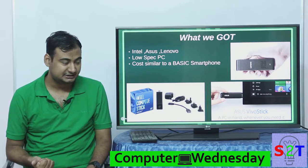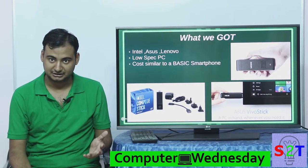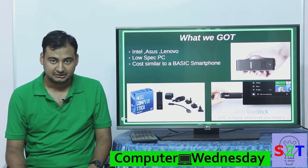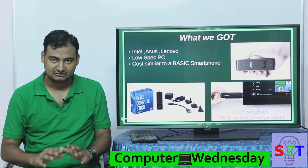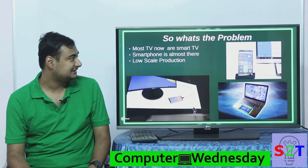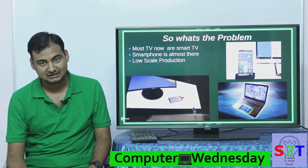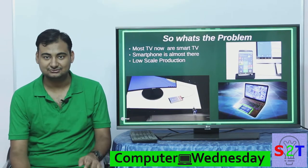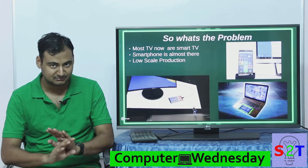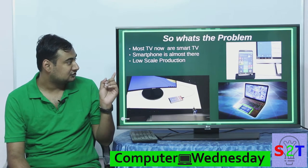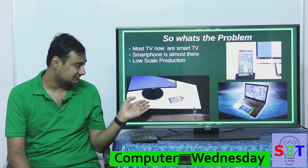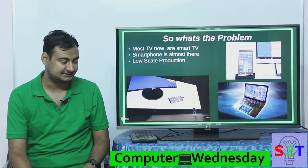So we have the pricing and branded companies sorted out — it all seems fine. But what's the problem? The problem is most TVs are now smart TVs, and not everybody is going to do spreadsheets on their smart TV, so that market has basically died.